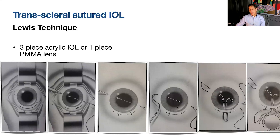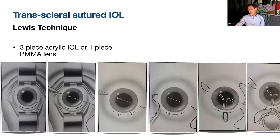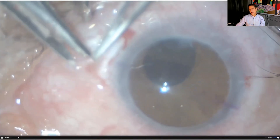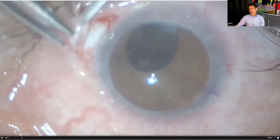Depending on the lens being implanted — PMMA, CZ lens with suture holes, or an iris prosthesis lens — we adjust wound size accordingly. For an MA60 or Tecnis one, a 3 mm incision suffices. We exteriorize the suture, cut it in half, fixate to the haptics, introduce the lens, pull our sutures, and tie them to the sclera.